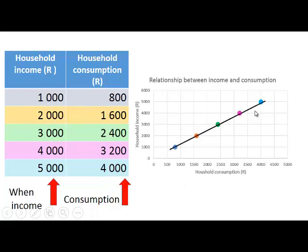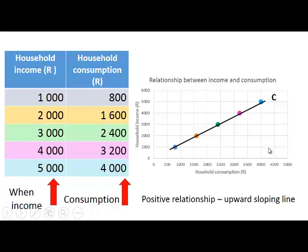We can draw a line through the different data points, and we call that line C for consumption. As you can see, this line shows a positive relationship — it's an upward sloping curve — and that is because there is a positive relationship between household income and household consumption. When income increases, consumption also increases.